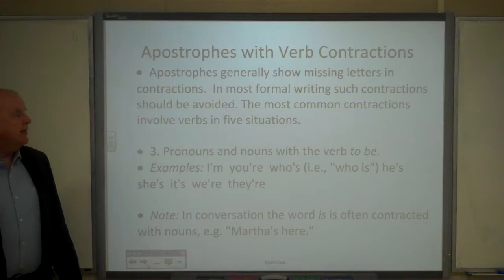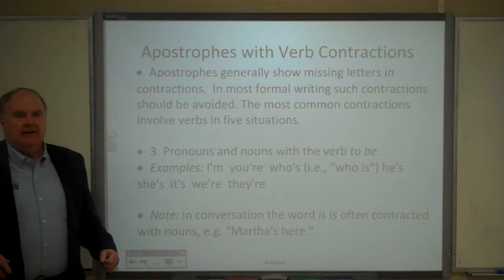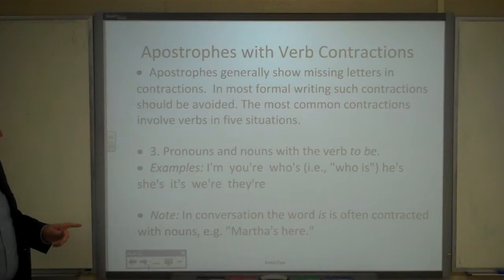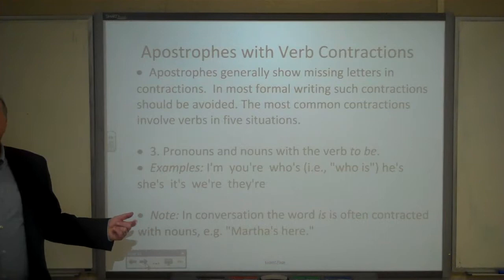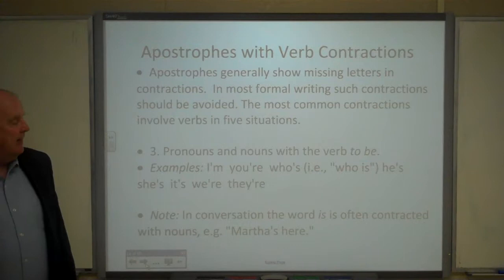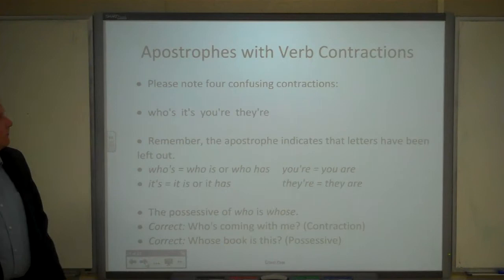Pronouns and nouns with the verb to be are also contracted — I'm, who's meaning who is, he's, she's, we're, and so on. In conversation the word is is often contracted with nouns too. So instead of 'Martha is here,' we might say 'Martha's here,' and you will sometimes see that in writing, not only with pronouns but with other nouns as well.